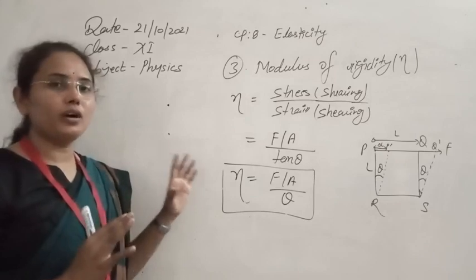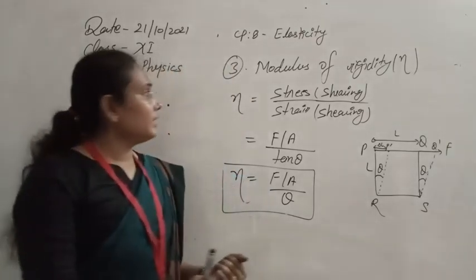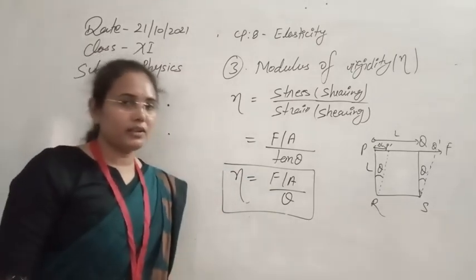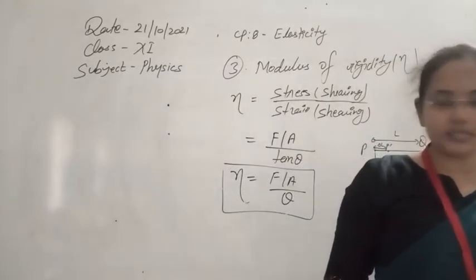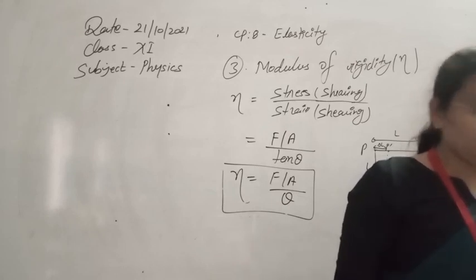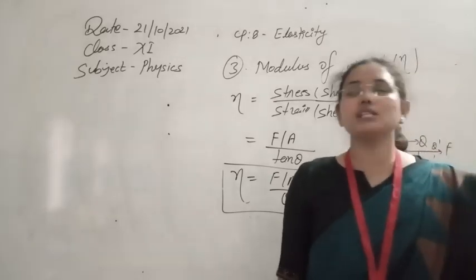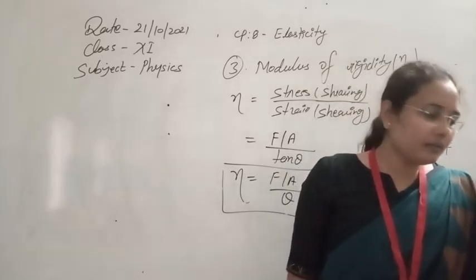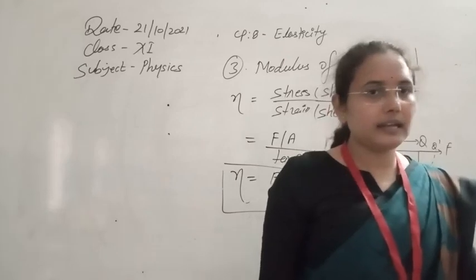So there are three kinds of elastic constraints: the first is Young's modulus of elasticity, the second is bulk modulus of elasticity, and the third is modulus of rigidity. Now let's compare all three — which type of system (solid, liquid, or gaseous) can have which kind of elastic constraint.